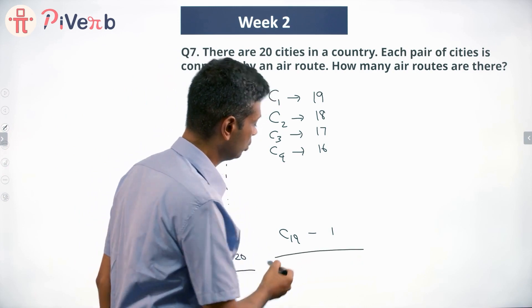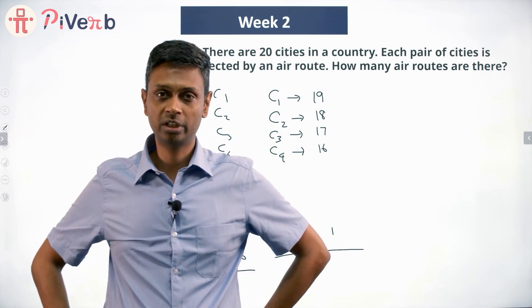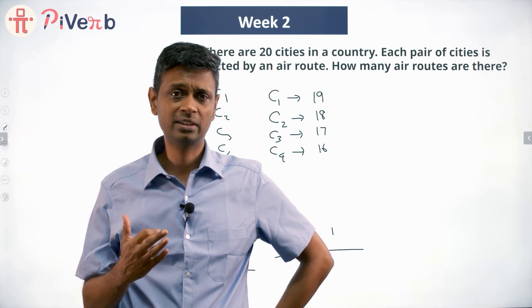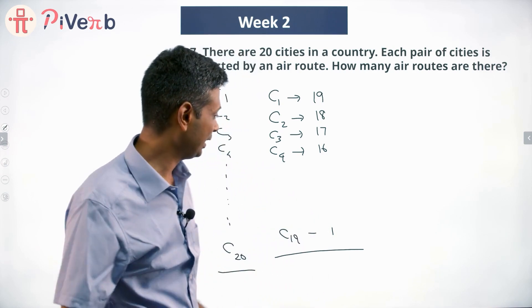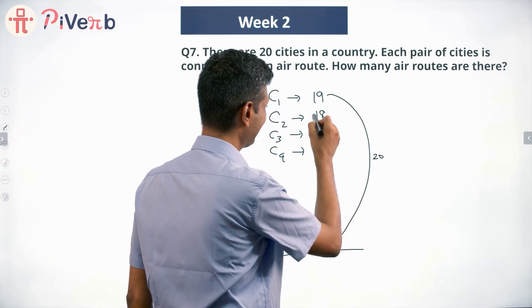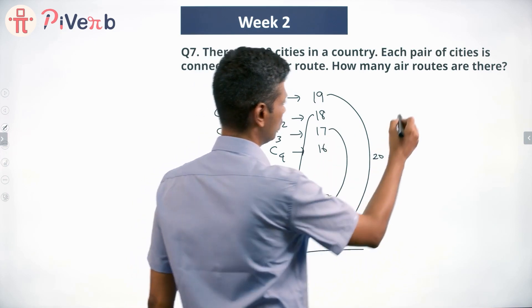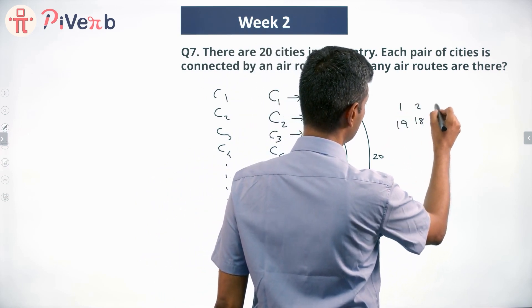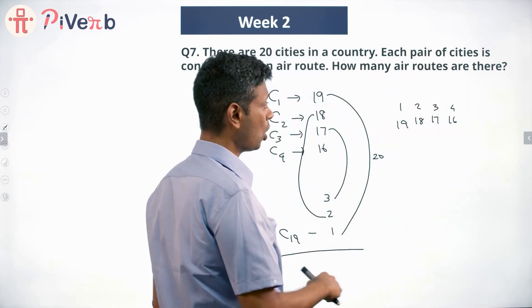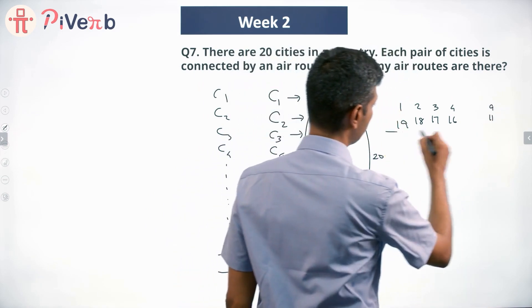So the total air routes is just adding up all these numbers — the natural numbers from 1 to 19. Rather than adding them one by one, I pair them up: 1 and 19 make 20, 2 and 18 make 20, 3 and 17 make 20, 4 and 16 make 20 — all the way till 9 and 11, which also make 20. So we get nine pairs each summing to 20.